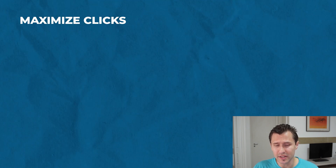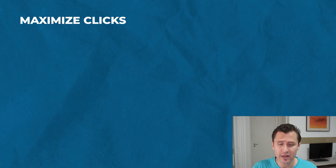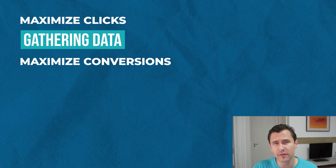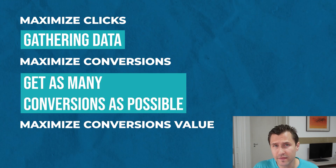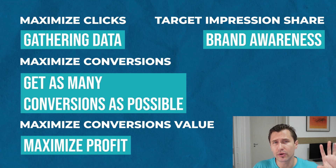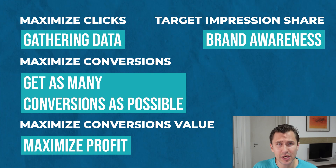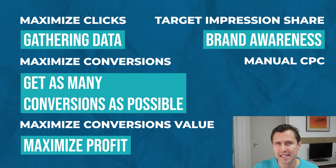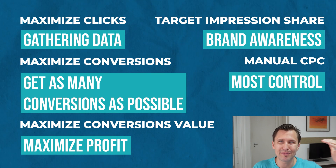To summarize all the bidding strategies: Maximize Clicks — use when you're a new account without conversion data and want to drive traffic. Maximize Conversions — use when you want as many conversions as possible. Maximize Conversion Value — use to increase profit and focus on higher-end conversions. Target Impression Share — use for brand awareness and to outshow competitors. Manual CPC — similar to Maximize Clicks but fully manual; it gives you the most control but utilizes the least machine learning, since you're not giving Google direction on what you're looking for.